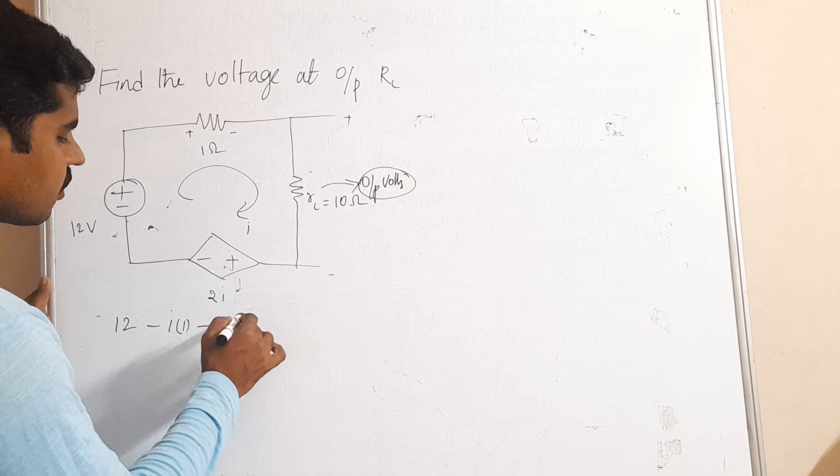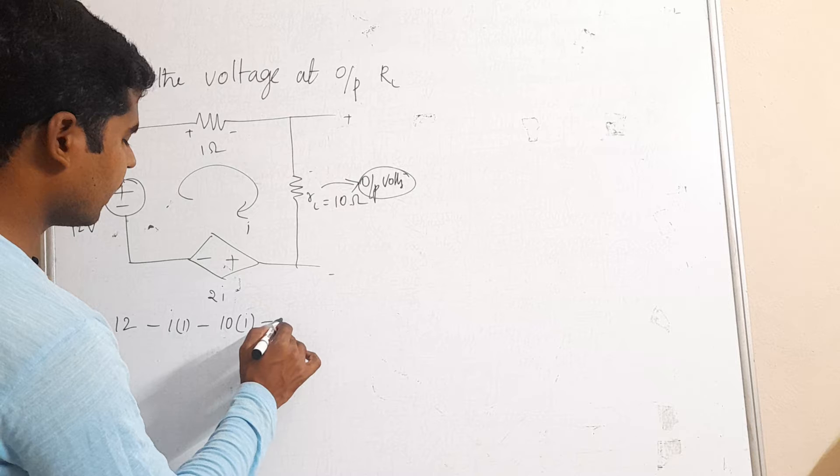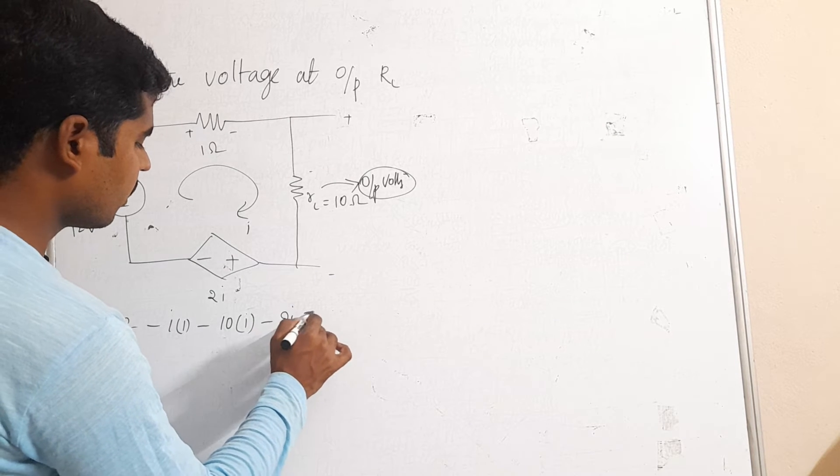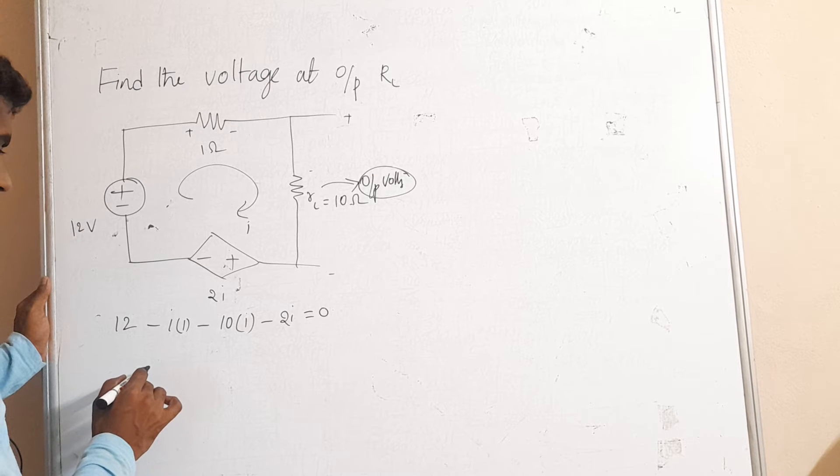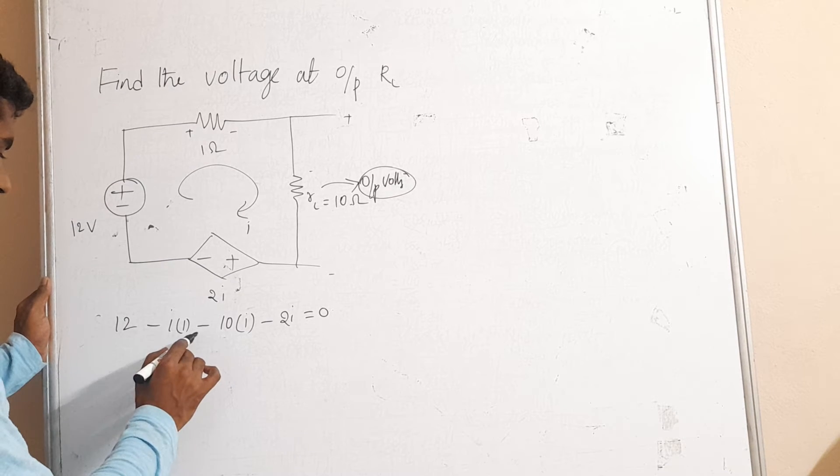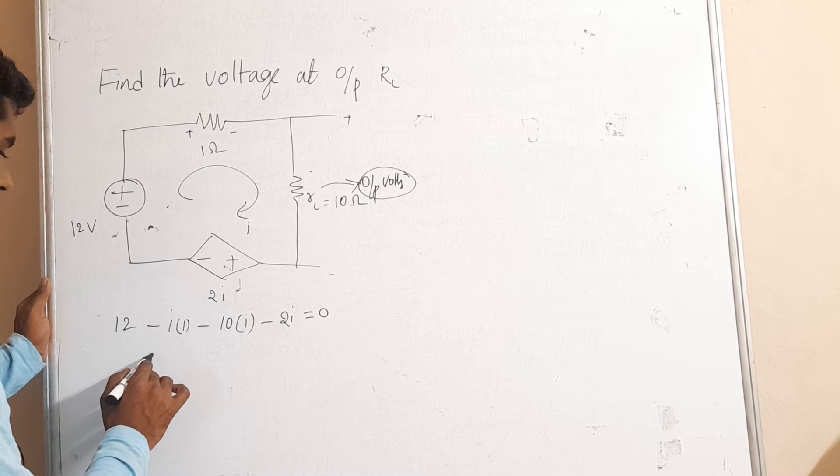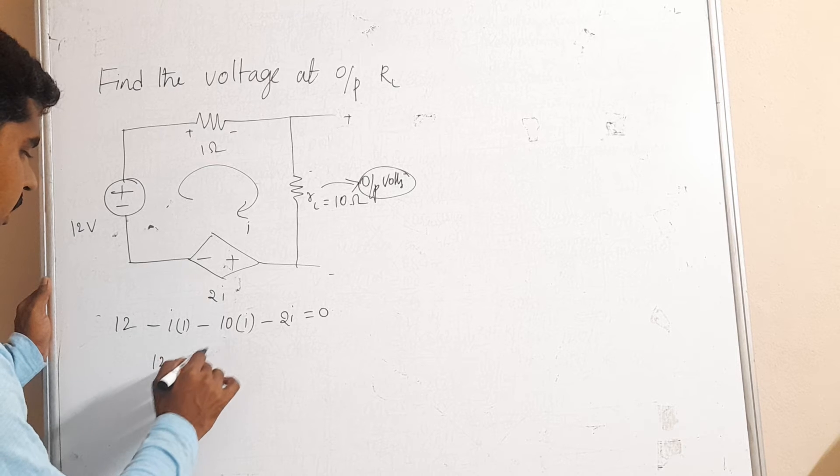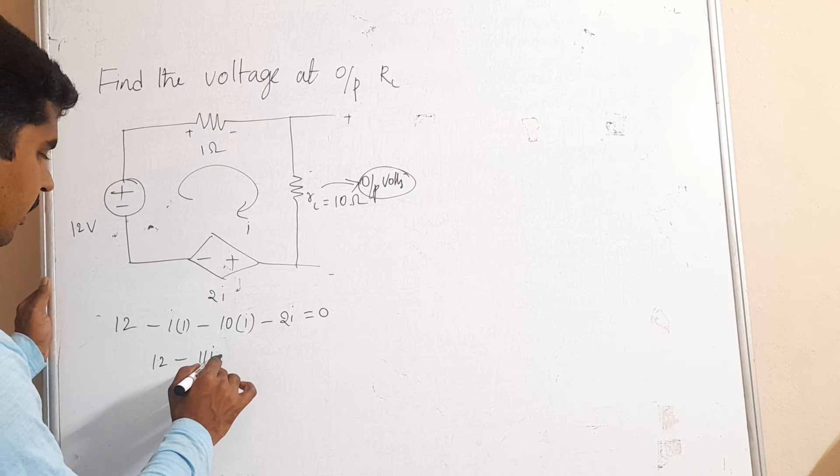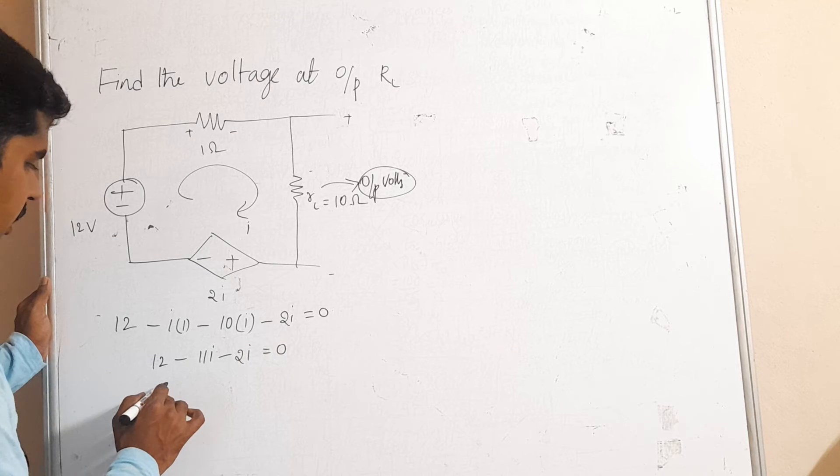The corresponding current is passing through I here, plus 2 minus, so that is why it is decreasing minus 2I is equal to 0. Therefore this gives rise to 12 minus 10, that gives rise to 12 minus 11I minus 2I that gives rise to 0.